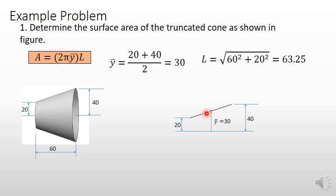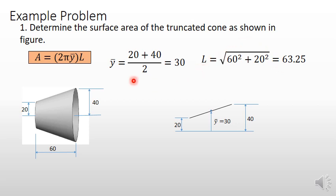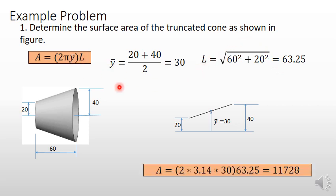The length of this line can be obtained from the Pythagorean theorem. Drawing a horizontal and vertical line gives a right-angled triangle. The base of this triangle is 60 and the height is 40 minus 20, that is 20. Using this relation, the length of the inclined line is 63.25. Putting this value of L and ȳ into the formula, the surface area is equal to 11,728.